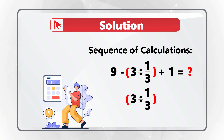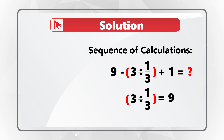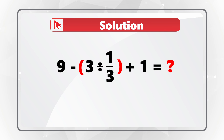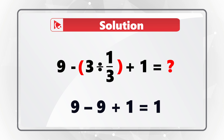When you calculate 3 divided by one-third, you get the result of 9. Then you need to do sequential subtraction and then addition: 9 minus 9 equals 0, plus 1 equals 1. This is the reason the correct choice is choice A, 1.